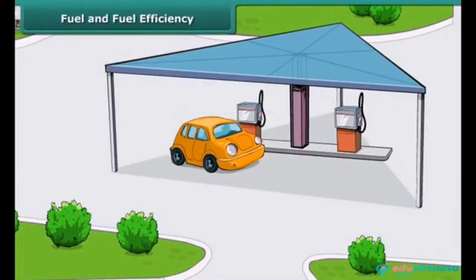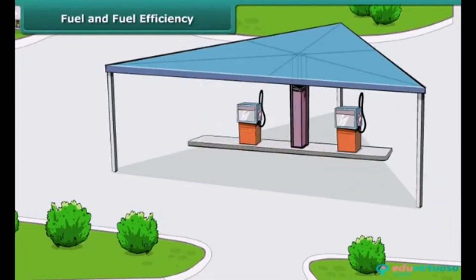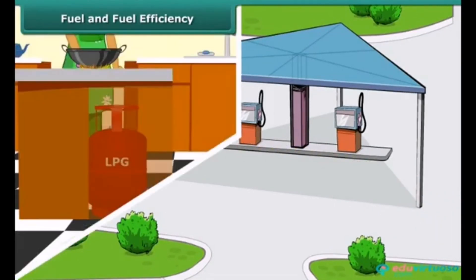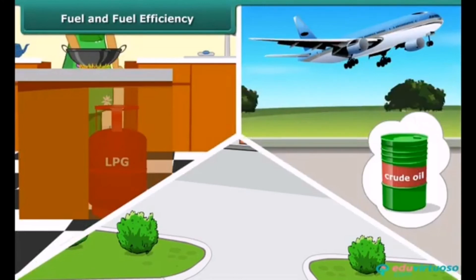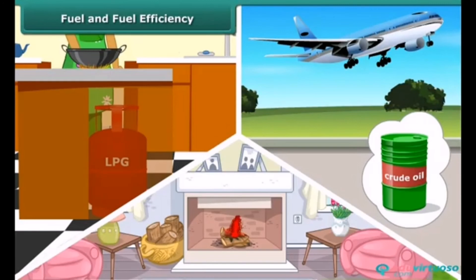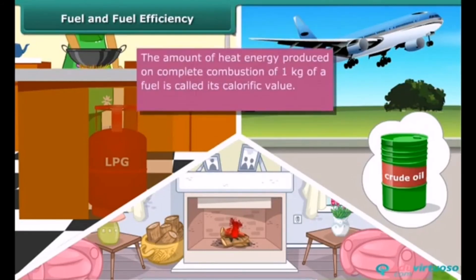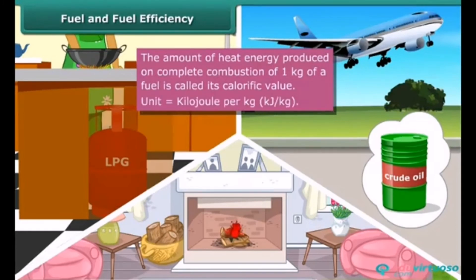Fuels are an important source of energy. We use petrol or diesel for driving cars, LPG for cooking, crude oil for flying airplanes, and wood for warmth. All fuels do not burn equally efficiently — fuel efficiency is determined by its calorific value. The amount of heat energy produced on complete combustion of 1 kg of a fuel is called its calorific value, expressed in kilojoules per kg. The calorific value of LPG is more than that of wood or coal, which is why LPG is a more efficient fuel.